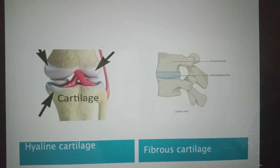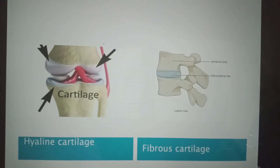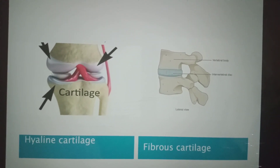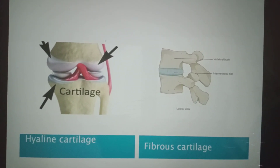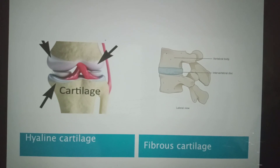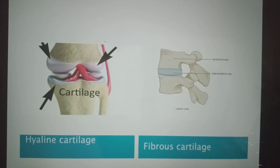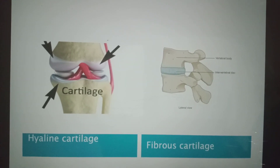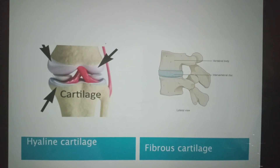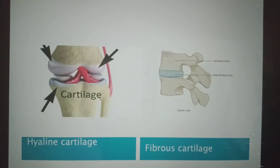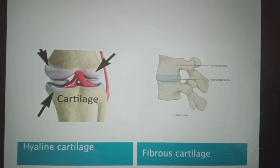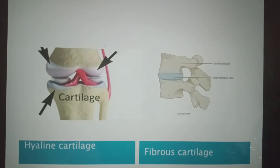The fibrous cartilage found in the intervertebral disc was an example of fibrous cartilage. I will discuss about bones in my next video lesson. Thank you and have a nice day.